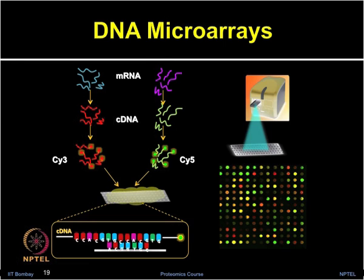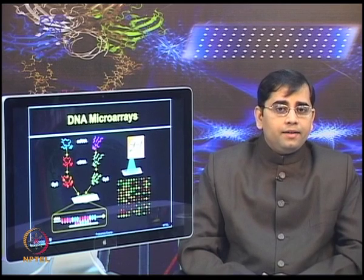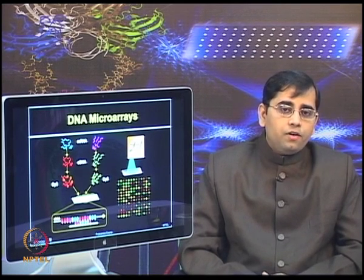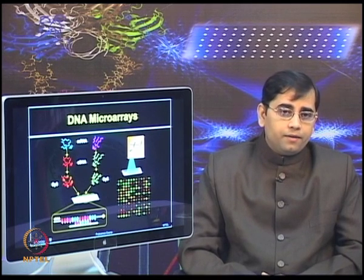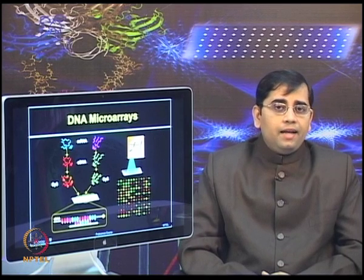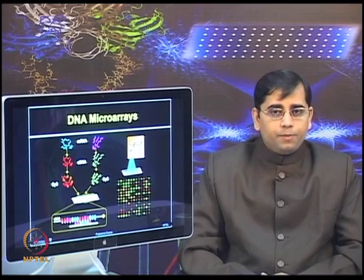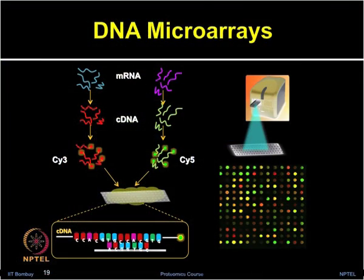In a typical microarray experiment, the aim is to compare a healthy sample with a disease-treated sample. From both populations, mRNA is extracted and then converted to cDNA by the enzyme reverse transcriptase. During this step, samples are labeled using fluorescently labeled deoxyribonucleotide triphosphates. Labeled cDNA with complementary sequences is then hybridized onto the microarray slide. Washing steps are performed to remove unhybridized probe, and the slide is scanned to look for changes in gene expression. In this manner, expression levels of thousands of genes can be measured and analyzed simultaneously.